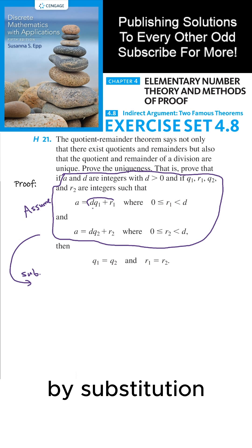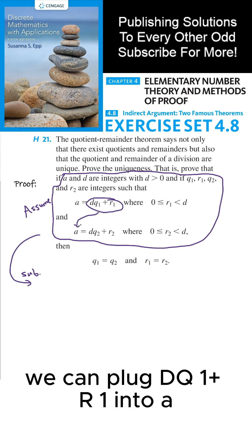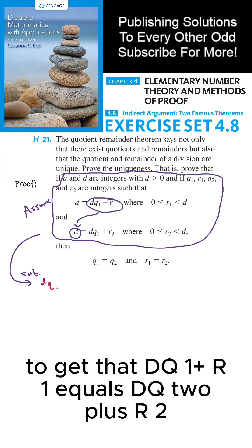By substitution, we can plug DQ1 plus R1 into A to get that DQ1 plus R1 equals DQ2 plus R2.